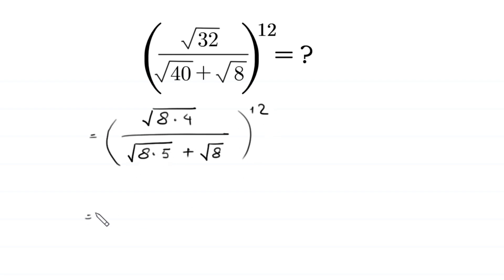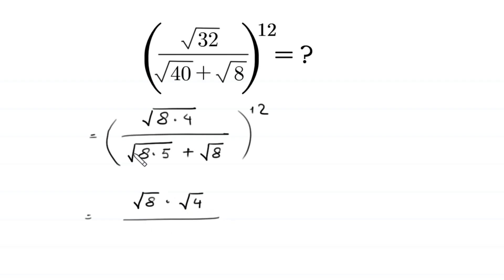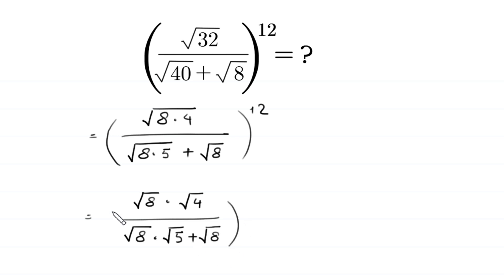Next, square root of 8 times 4 can be written as square root of 8 times square root of 4, divided by square root of 8 times 5, which can be written as square root of 8 times square root of 5, plus square root of 8, whole to the power 12.